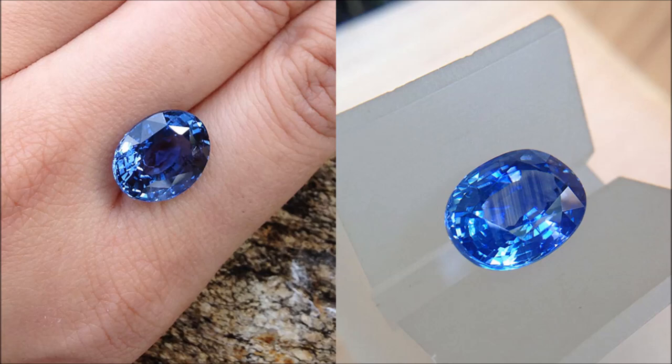So why are these two gemstones a good comparison for each other? Because they both have rutile silk inclusions, and this rutile silk is an excellent way of distinguishing the difference between an unheated blue sapphire.